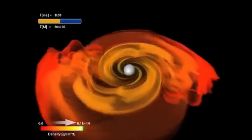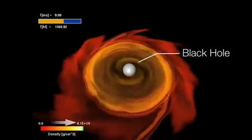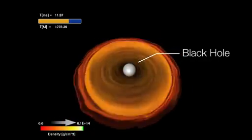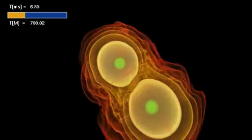Earlier simulations demonstrated that mergers could make black holes. Others had shown that the high-speed particle jets needed to make a gamma ray burst would continue if placed in the swirling wreckage of a recent merger.